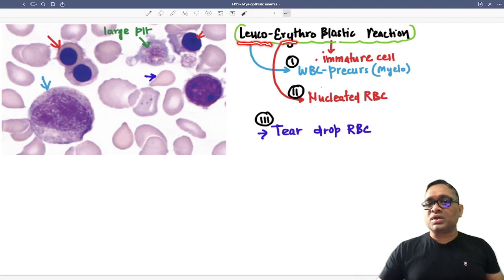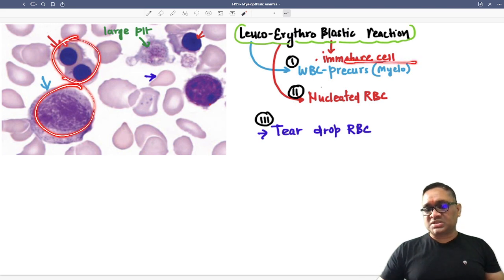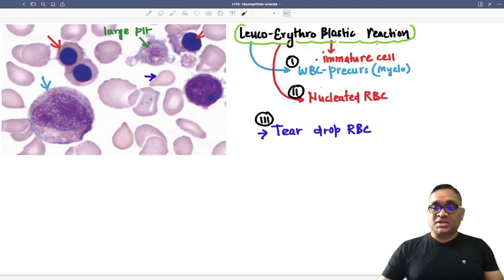...this is called leukoerythroblastic reaction. Blast means immature. Leuco means WBC precursor, erythro means RBC precursor. So WBC precursor, RBC precursor, blastic reaction is called leukoerythroblastic reaction seen in myelophthisic anemias.